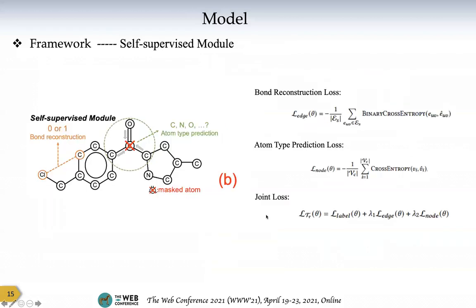To maximize the information we capture from molecular structure, we designed two self-supervised modules. The first is bond reconstruction: we randomly sample atom pairs and utilize the learned atom representations to predict if there is a bond between these two atoms. The second is atom type prediction: we randomly sample an atom, aggregate its neighbor atoms' information, and use this to predict what that atom is. We define two loss functions for these modules, and our joint loss function combines bond reconstruction loss, atom type prediction loss, and label prediction loss.